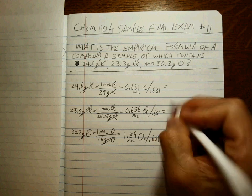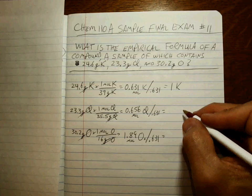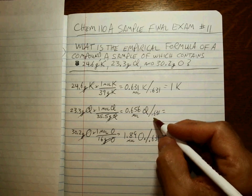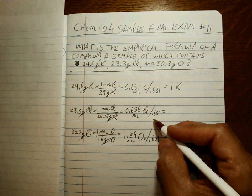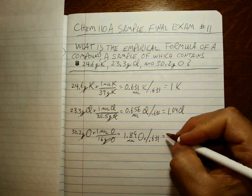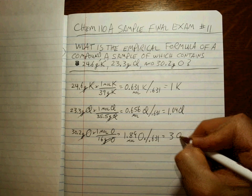At least one of them has to be exactly one. We have one K. When we take 0.656 divided by 0.631, we get 1.04, and we get three oxygens.